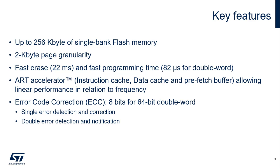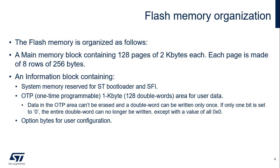The adaptive real-time memory accelerator with an instruction cache, a data cache, and a pre-fetch buffer allows a linear performance in relation to frequency. The flash memory supports error code correction, or ECC, which is 8 bits long for each 64-bit double word. A single error is detected and corrected. A double error is detected but not corrected.